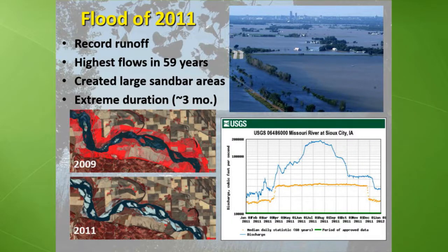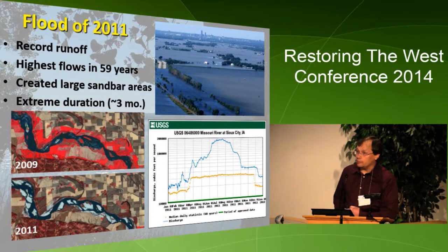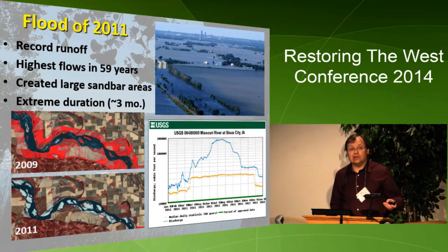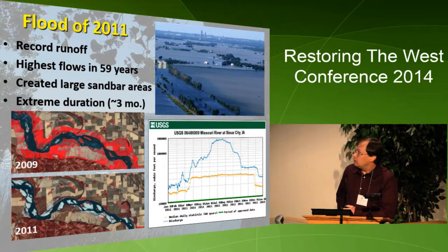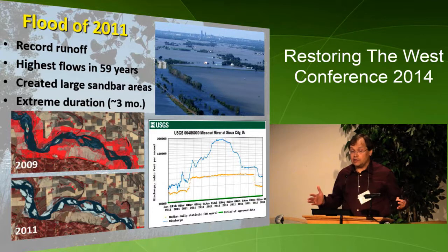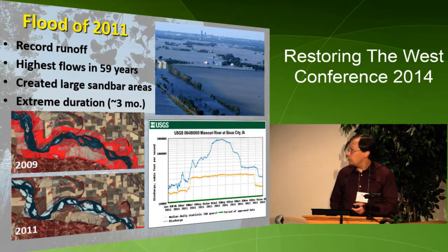The saying is, be careful what you wish for. We did get a large flow event in 2011 after basically six decades of much lower flows. We had record runoff in the upper Missouri during that spring and summer, with the highest flows since the 1952 record discharge — higher than the record post-dam releases of 1997. So we had a big event. It was rather unusual in its duration — some areas were inundated for about three months — and it was effective in creating large expanses of sandbar habitat.